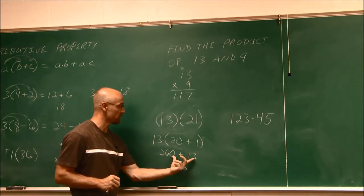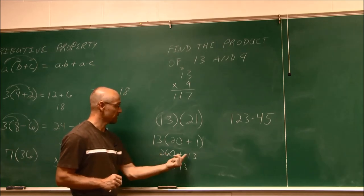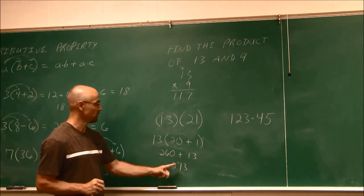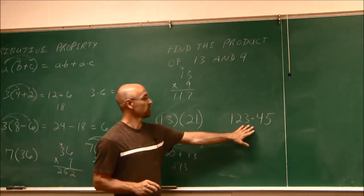So instead of writing it vertically, 0 and 3 is 3, 6 and 1 is 7, and the 2, 273. Now let's look at this one. As the numbers get larger, sometimes they're harder to keep track of. So maybe we just want to do it vertically like we were originally taught. So we do it this way.